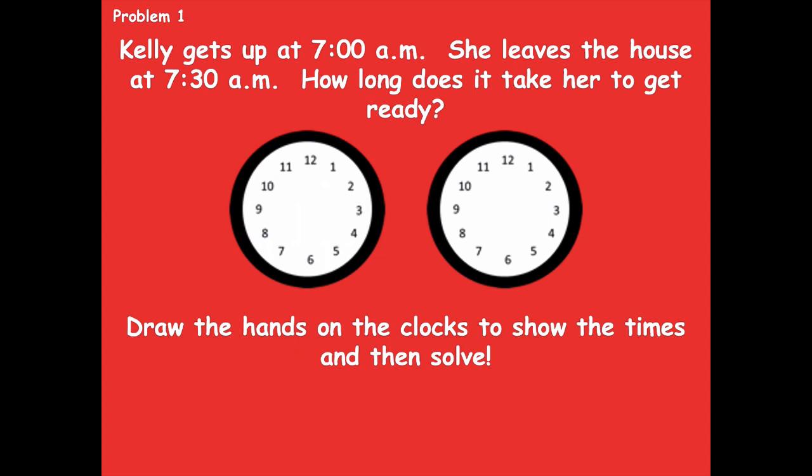Your hour hand and minute hand should look like this for 7 o'clock: the hour hand pointing to the 7 and the minute hand pointing to the 12. For 7:30, the hour hand needs to be in between the 7 and the 8, and 30 minutes is represented at the 6. To go from 7 o'clock to 7:30, you went halfway around the clock — it's almost like a fraction. Half of 60 minutes is 30 minutes, that's a half an hour. So 30 minutes is how long it takes Kelly to get ready. You could also skip count: 5, 10, 15, 20, 25, 30 to get to 7:30.